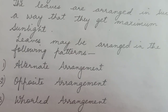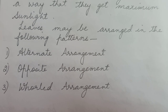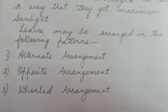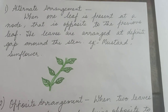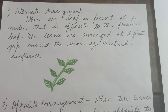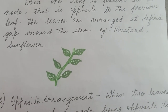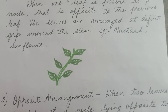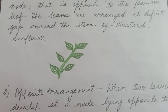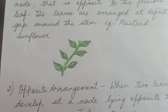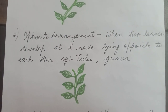Leaves may be arranged in the following patterns: one is alternate arrangement, second is opposite arrangement, and the third one is whorled arrangement. When one leaf is present at a node opposite to the previous leaf, with leaves arranged at a definite gap around the stem, it is called alternate arrangement. You can see in the picture that the leaves are present on opposite sides at a definite gap. Examples of alternate arrangement are mustard and sunflower.